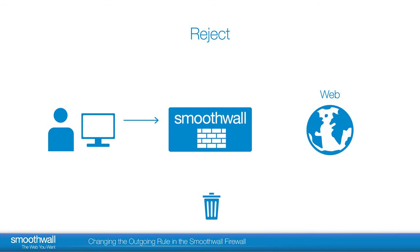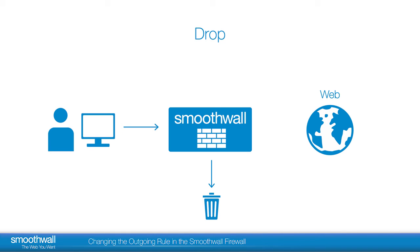Reject prevents traffic access and sends a message, ICMP Destination Unreachable, back to the request originator, informing them that the traffic was not allowed. Drop silently prevents traffic going through the system, but it does not inform the originator that the traffic has been rejected. Drop is typically used on internet-facing connections to protect against stealth attacks pinging random addresses to establish if there is something at the end to attempt an attack.